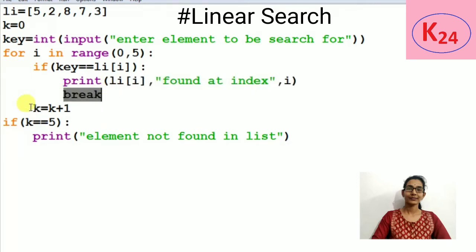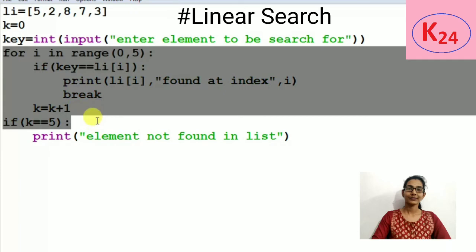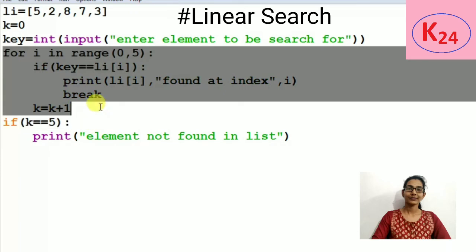Otherwise it exits from the if condition and increases the value of k by 1 every time. So this for loop continues till we get the search element.